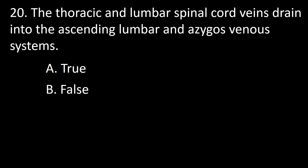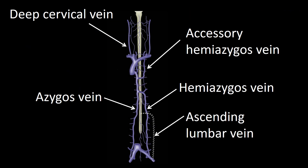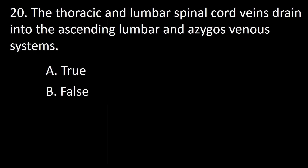Next question: the thoracic and lumbar spinal cord drains into the ascending lumbar and azygous venous systems — true or false? Drainage of the spinal cord is extremely variable in its anatomy. Most of the veins of the thoracic and lumbar spinal cords drain to the azygous system and/or the ascending lumbar system. So the answer is true.